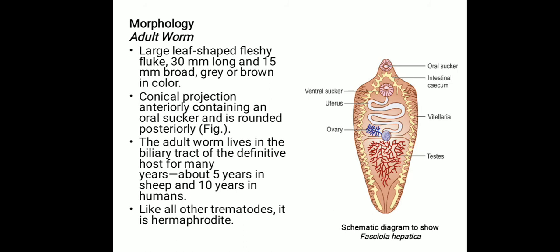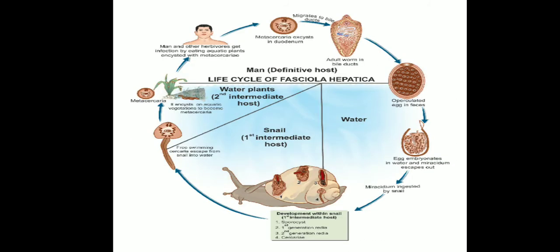The eggs of Fasciola hepatica and Fasciola buski cannot be differentiated if compared — those two species' eggs look identical. The eggs are unembryonated when freshly passed in stool.